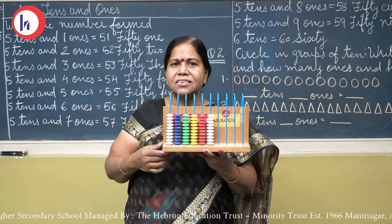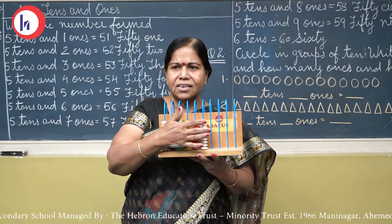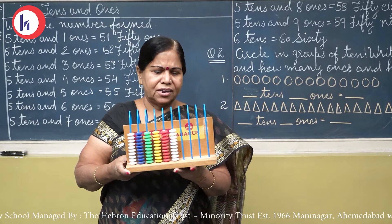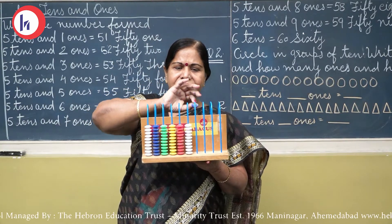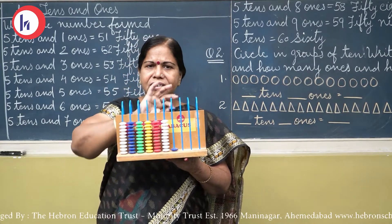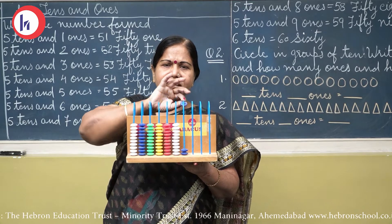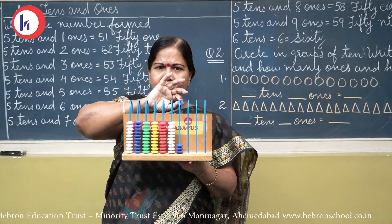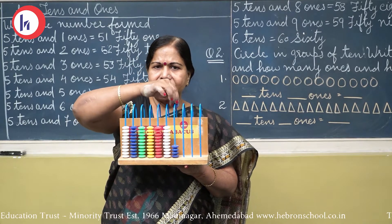Now children, 50 beads are there. Now I will add 1 more bead. So 5 tens and 1 — which number will form? 51. Next, I will add 2 more beads. 5 tens and 2 — which number will form? 52. Now I will add more beads. 5 tens and 3 — which number will form? 53.